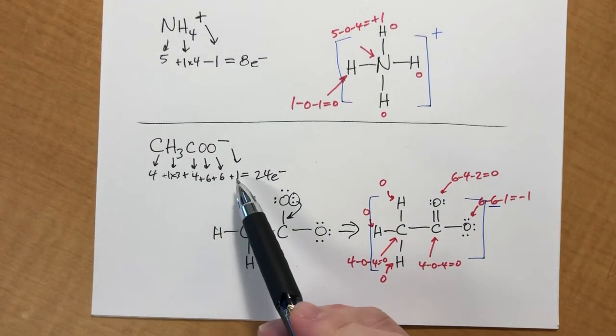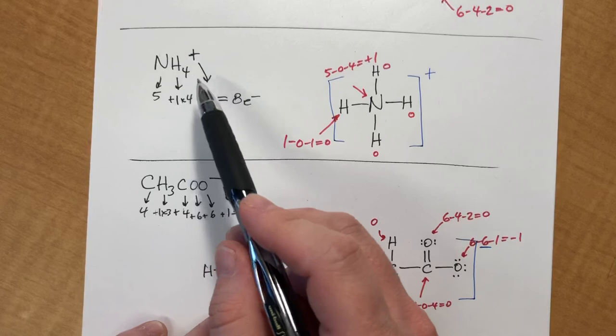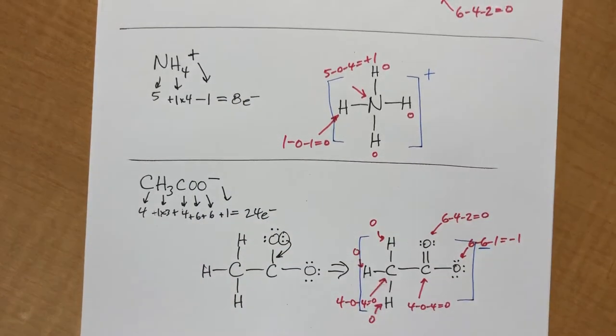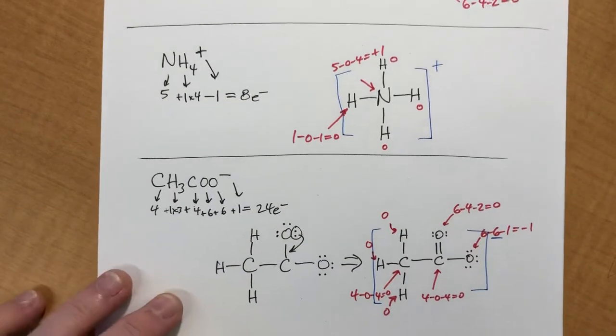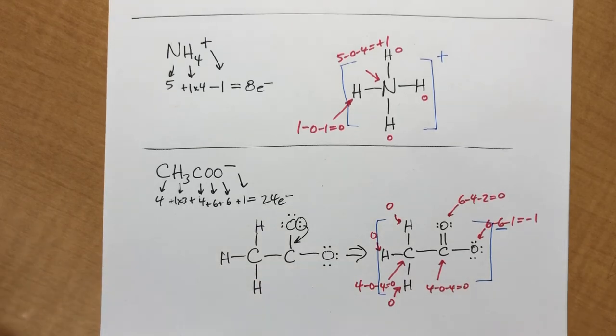Obviously, if you had a charge of like negative three, you would add three electrons. If you had a charge of like plus four, you would subtract four electrons. But this is an example of one that has multiple central atoms. Alright, let's stop there. Thanks.